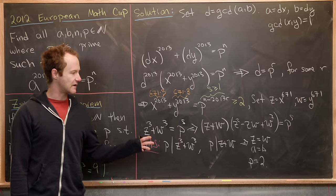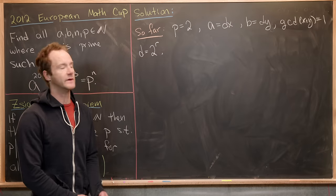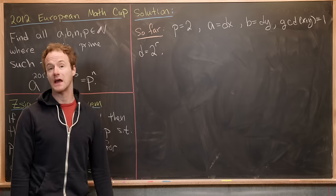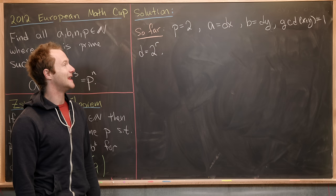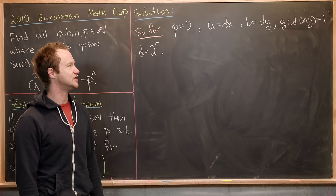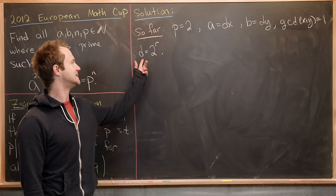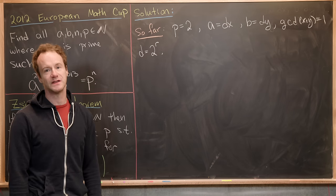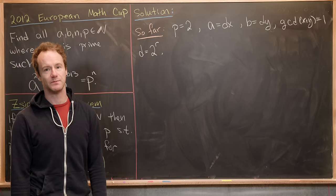So let's maybe take a summary of our facts, bring it to the top, and then we'll finish it off. So far, we have the following data. So we have p, our special prime, was equal to two. And then a we factored as d times x, b as d times y, where the gcd of x and y were one, then we calculated that d had to be equal to two to the r. Recall that d was the gcd of a and b.